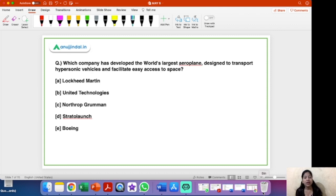That is question number one. Which company has developed the world's largest aeroplane designed to transport hypersonic vehicles and facilitate easy access to space? So this is the world's largest aeroplane which has been developed and it has completed its test flight also. Now, which company has developed it? You have five options: Lockheed Martin, United Technologies, Northrop Grumman, Stratolaunch and Boeing. Out of these five options, the right answer is option D, that is Stratolaunch.